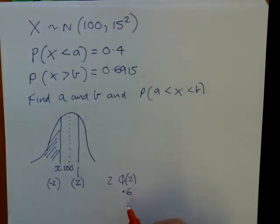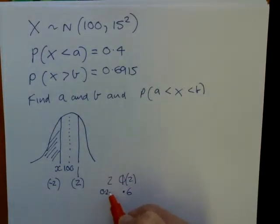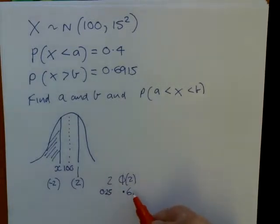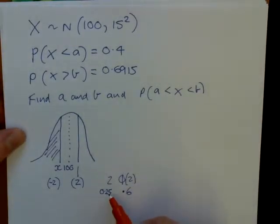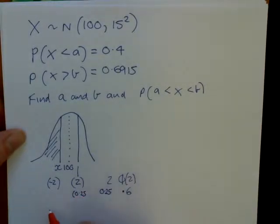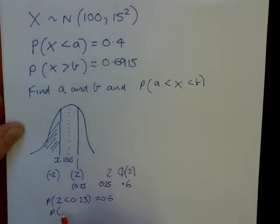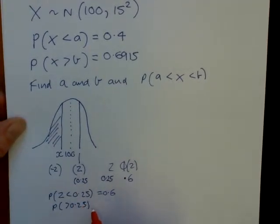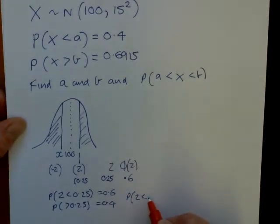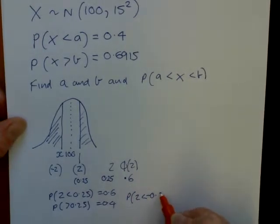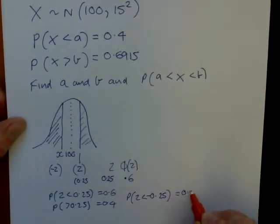So if we look up 0.6 in the tables, the closest we can get to that is a z-value of 0.25. It doesn't give you exactly 0.6, but to two decimal places it's as close as we can get. So the probability that z is less than 0.25 is 0.6. So that means the probability that z is greater than 0.25 would be 0.4, so this bit would be 0.4.